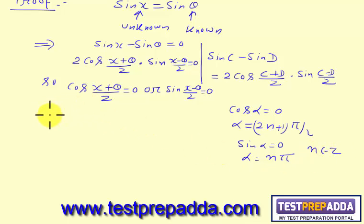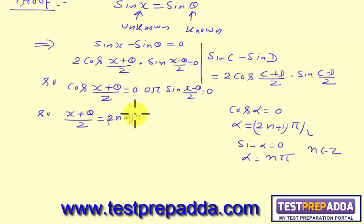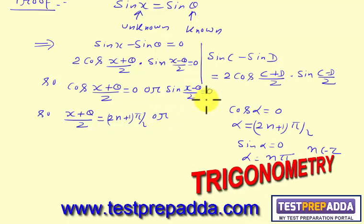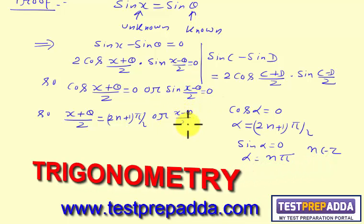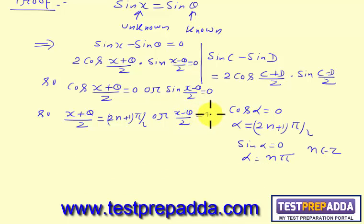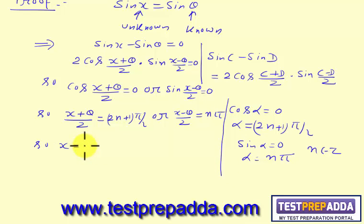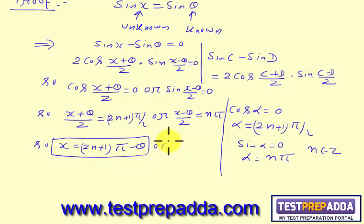Applying these results: from cos((x+θ)/2) = 0, we get x + θ/2 = (2n+1)π/2, giving x = (2n+1)π − θ. From sin((x−θ)/2) = 0, we get x − θ/2 = nπ, giving x = 2nπ + θ.